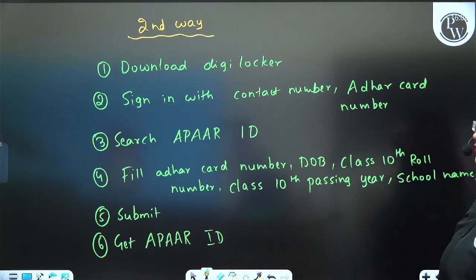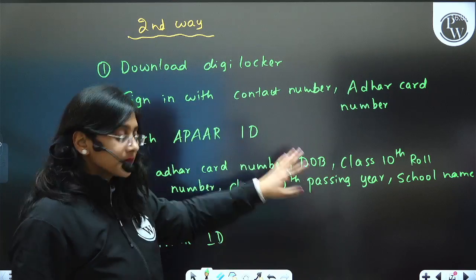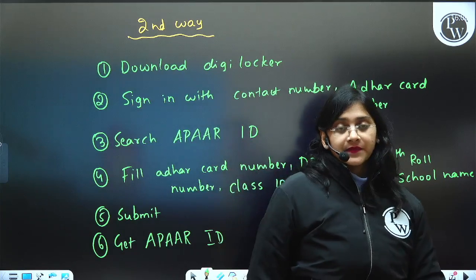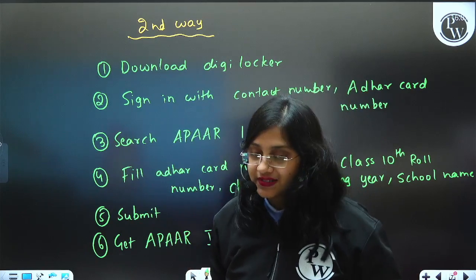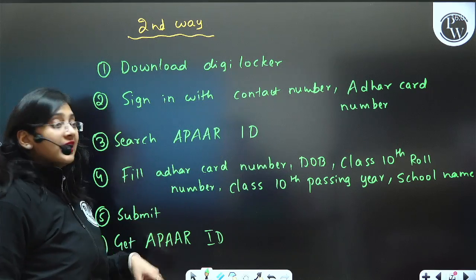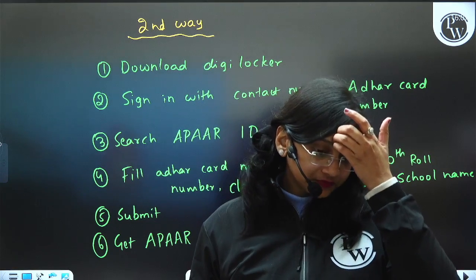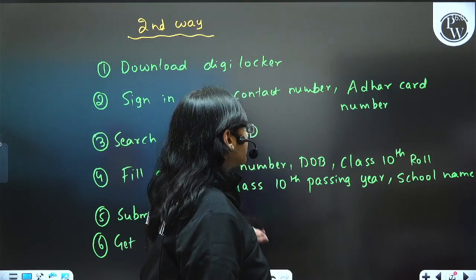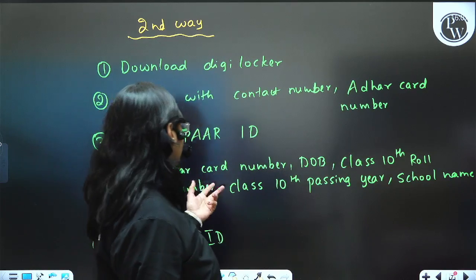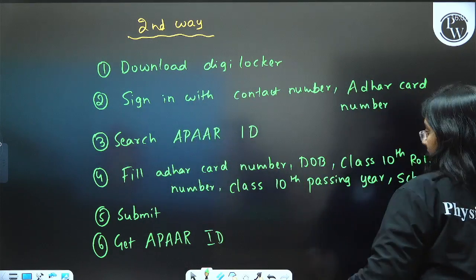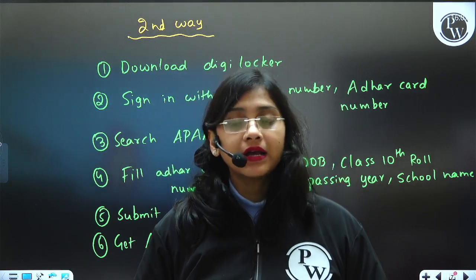If you do not want to go through the school, you can also generate your own Apar ID. For this, you have to first download DigiLocker and sign in with your contact number and Aadhaar card number — for which your Aadhaar should be linked with your contact number. Once signed in, search for Apar ID, fill in your Aadhaar details, date of birth, and your class 10 standard roll number from your class 10 certificate, the passing year, and school name. Submit it and you will receive your Apar ID.